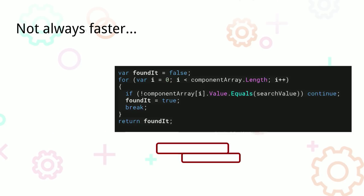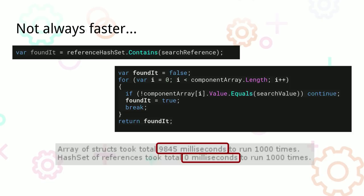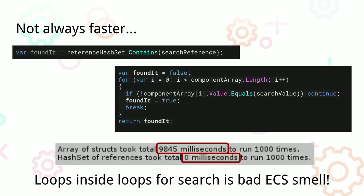There are definitely things faster with a hash set — like checking if something exists in a collection, that's what a hash set is made for. With an array you have to loop through until you find what you're looking for. The point of this slide is: when I first started with ECS, I heard 'performance by default,' and thought switching to ECS would automatically make my game faster. That's not necessarily the case — you do need to keep in mind what's happening with your RAM, and sometimes you have to change your algorithms.